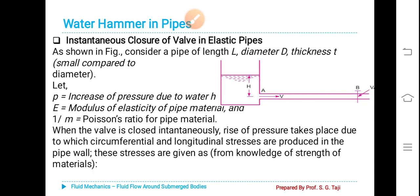As shown in figure, consider a pipe of length L, diameter d, thickness t. Why thickness is to be considered here? Because of the pressure increase the walls will get stretched. How much they will stretch, that is to be taken into account. That's why thickness also involved here, small compared to the diameter.